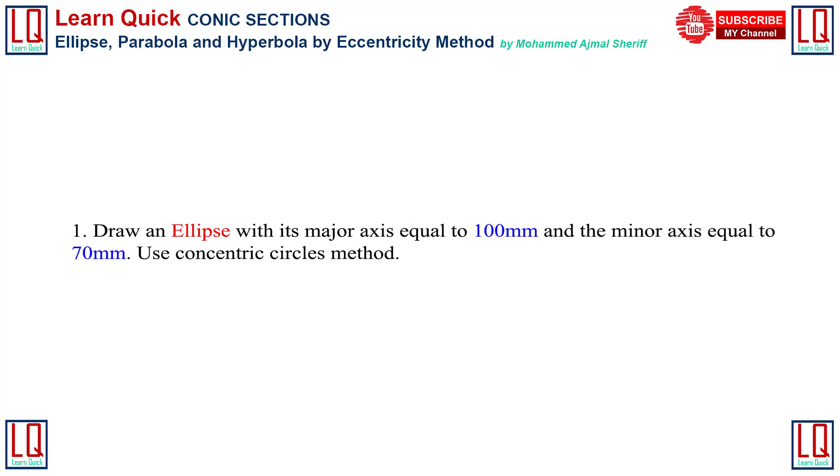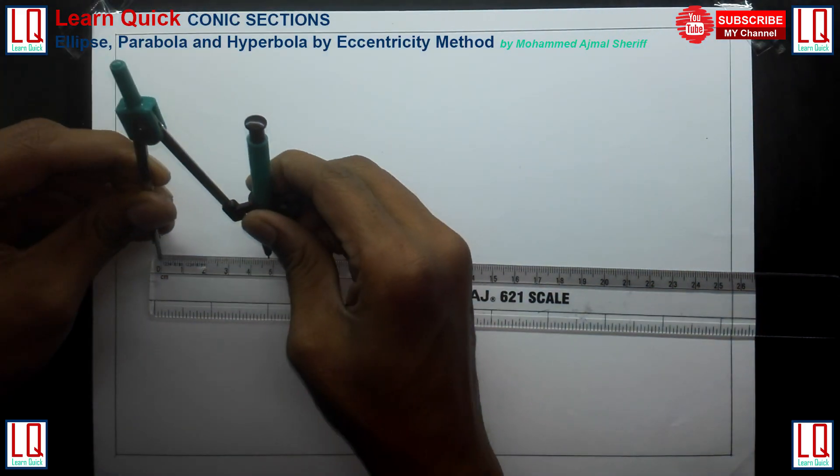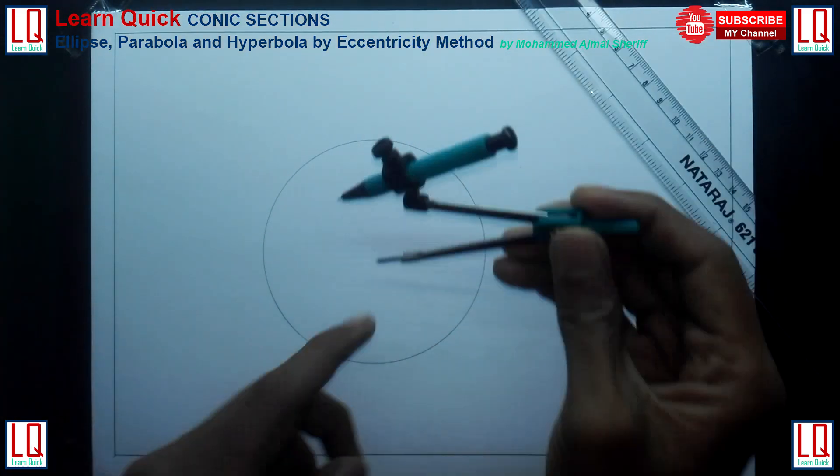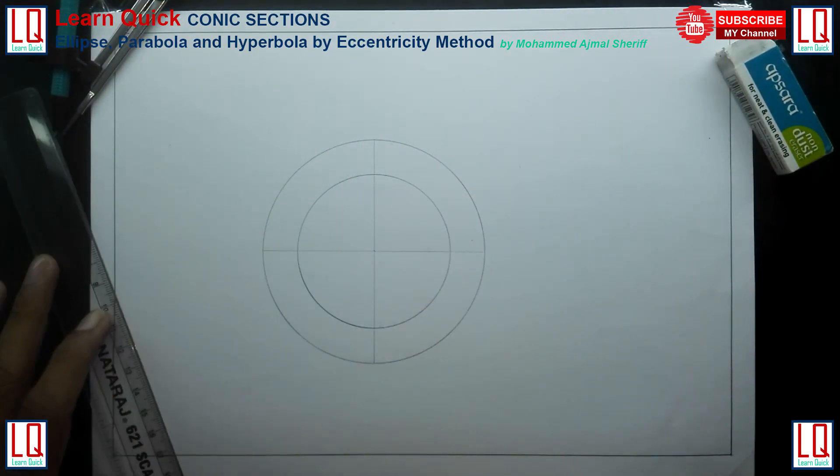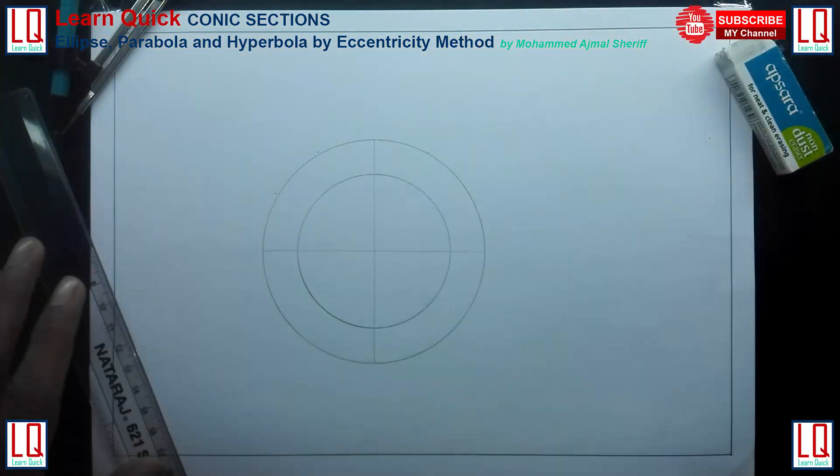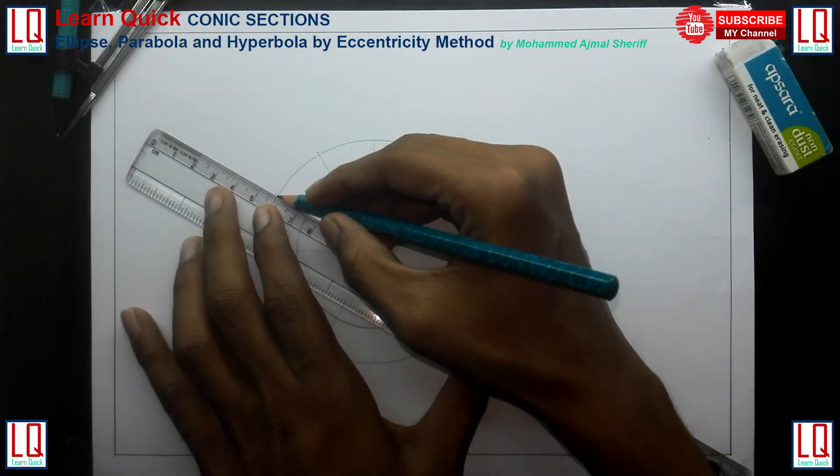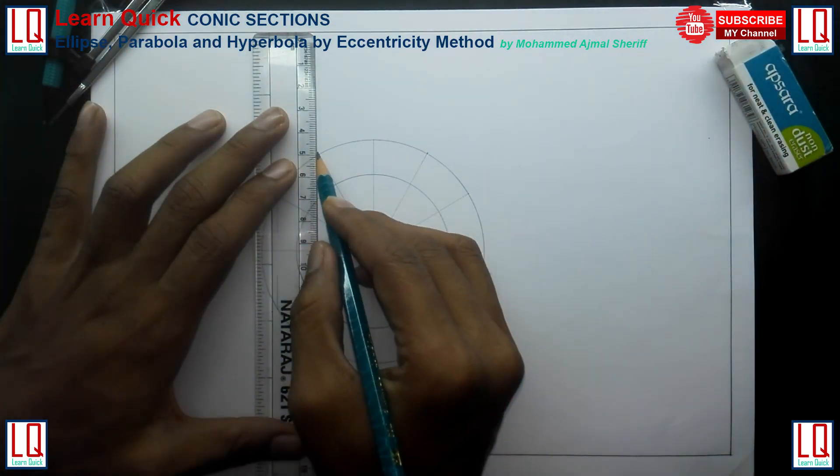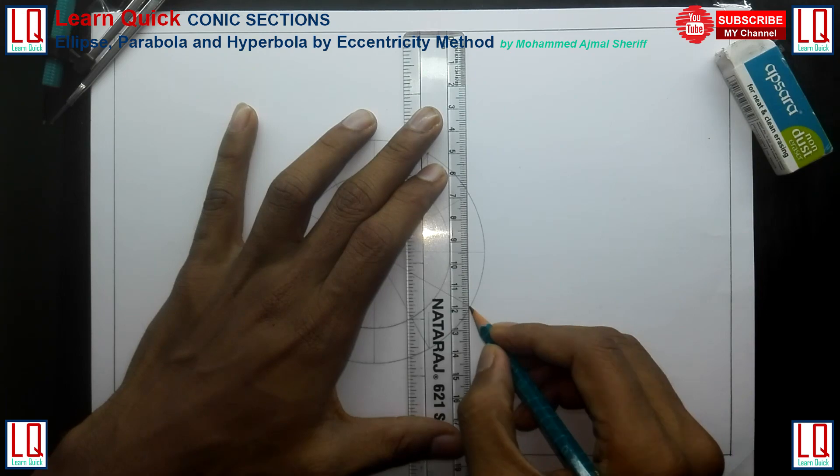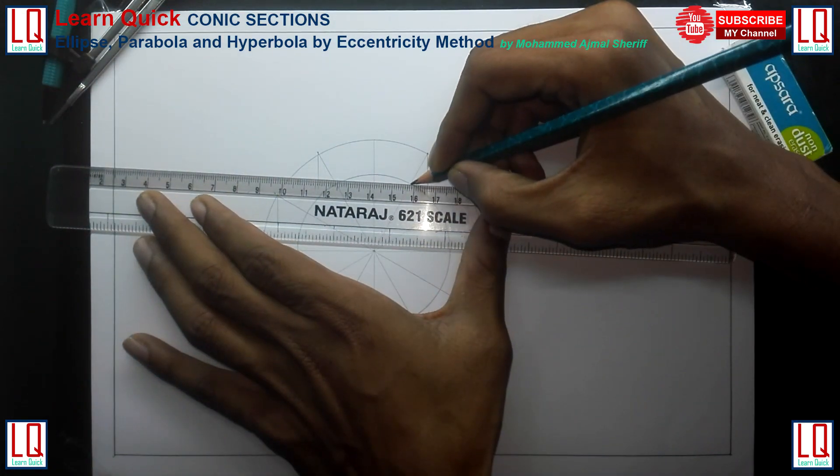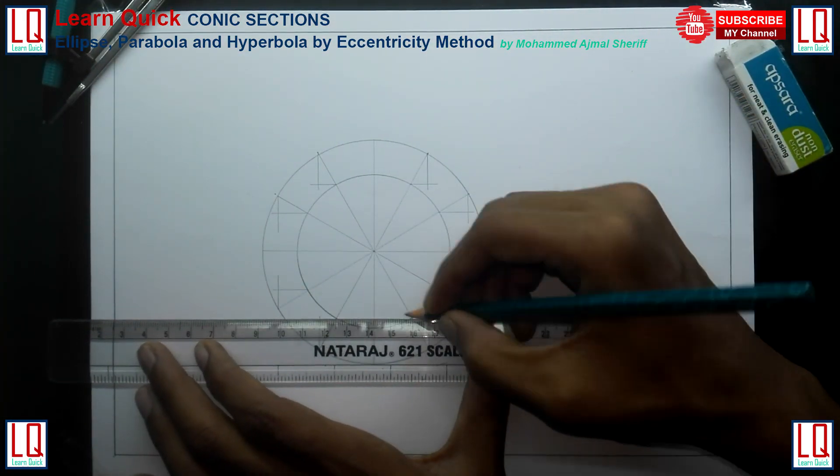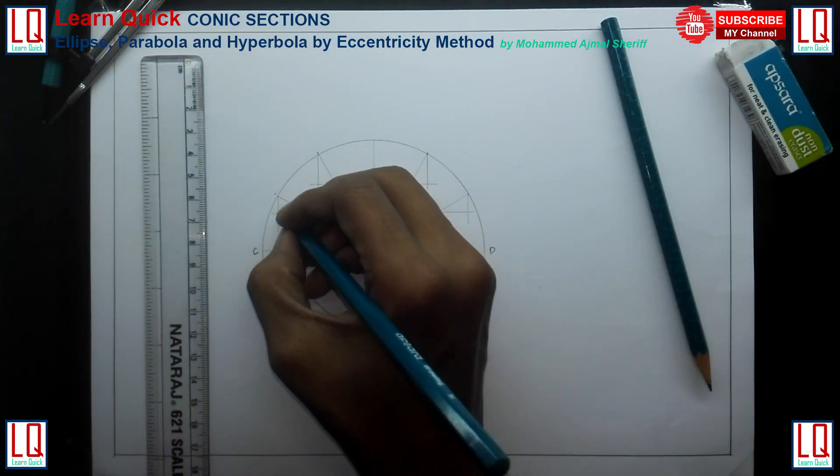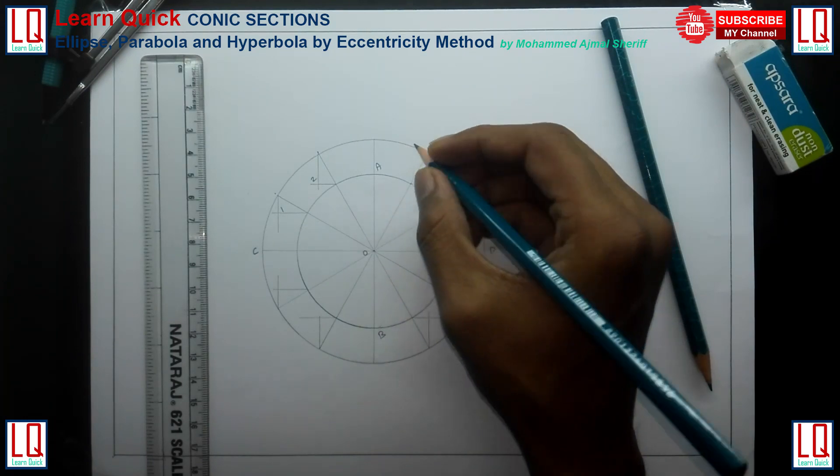Next, we draw an ellipse using concentric circle methods with major axis 100mm and minor axis 70mm. Draw two concentric circles of 100mm and 70mm diameter and divide the circle into 12 equal parts. From outer circle points draw vertical lines toward inward direction. From inner circle points draw horizontal lines toward outward direction, meeting the vertical lines drawn from the outer circle. Name the meeting points and you can join the points using French curves to obtain a smooth elliptical curve.